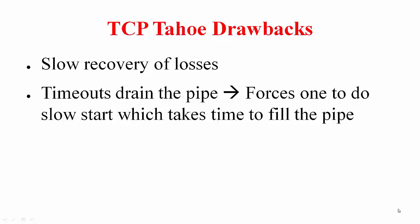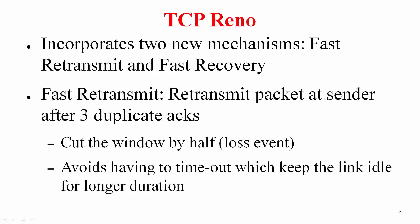TCP Reno incorporates two new mechanisms to handle this: fast retransmit and fast recovery. Fast retransmit is very simple — it is now going to rely on duplicate ACKs to figure out that something is lost. Basically, if it receives three duplicate ACKs it is going to conclude that that packet is lost.